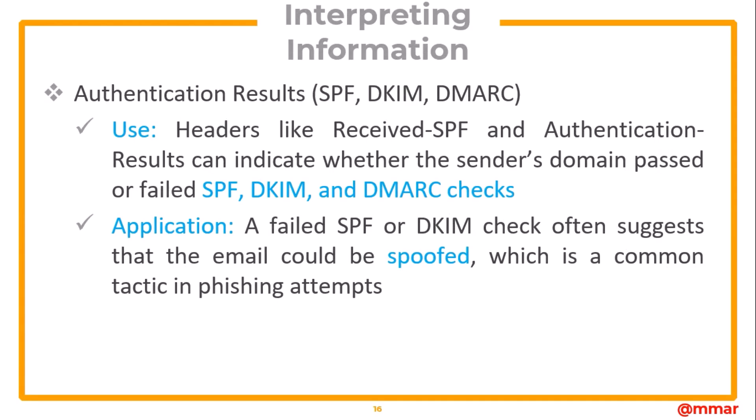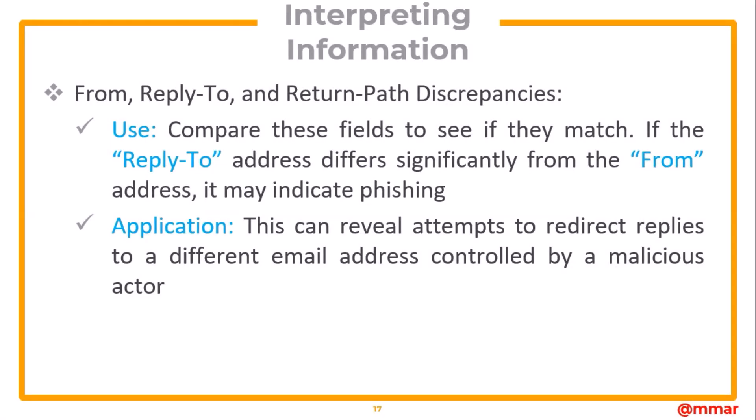We also get the authentication results for SPF, DKIM, and DMARC. Authentication results indicate whether the sender's domain passed or failed these checks. A failed SPF or DKIM check often suggests that the email could be spoofed, which is a common tactic in phishing attempts. We can also identify from, reply-to, and return path discrepancies by comparing these fields. If the reply-to address differs significantly from the from address, it may indicate phishing, potentially revealing attempts to redirect replies to a different email address controlled by a malicious actor.